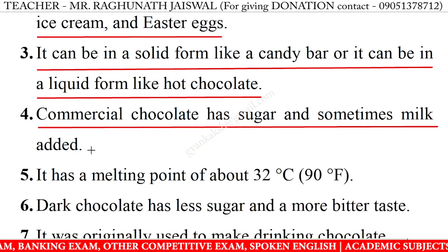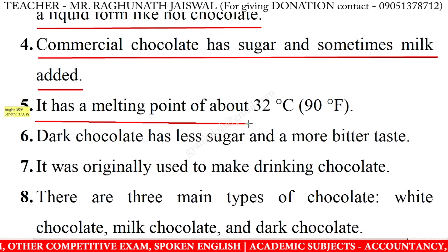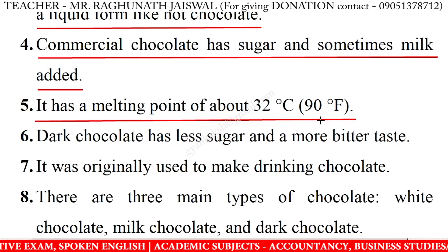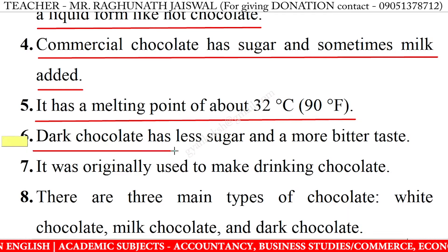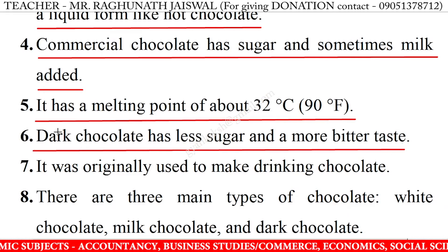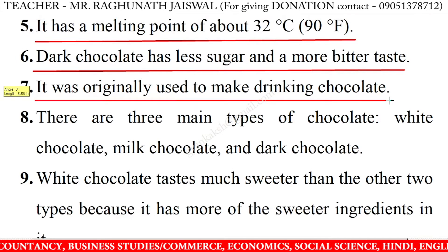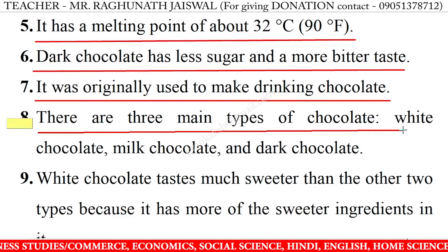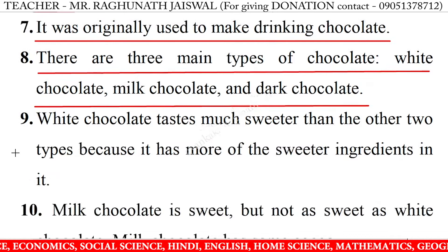Commercial chocolate has sugar and sometimes milk added. It has a melting point of about 32 degrees Celsius or 90 degrees Fahrenheit. Dark chocolate has less sugar and a more bitter taste. It was originally used to make drinking chocolate. There are three main types of chocolate: white chocolate, milk chocolate and dark chocolate.